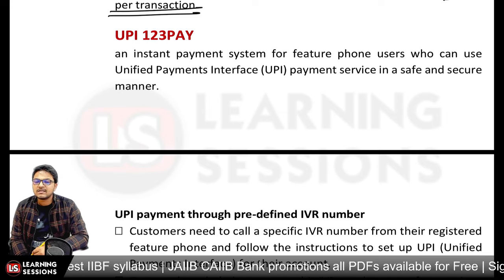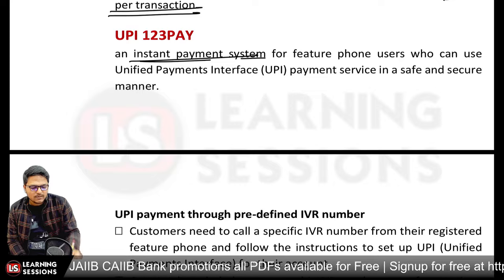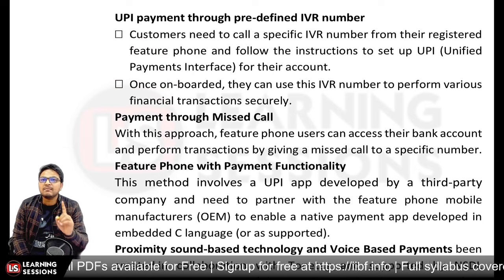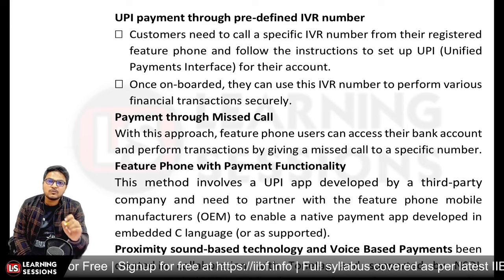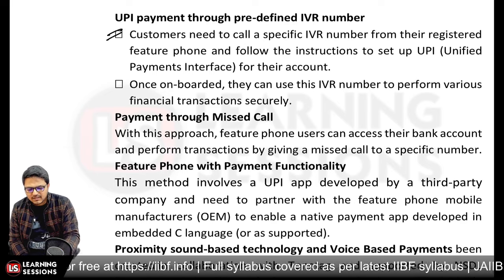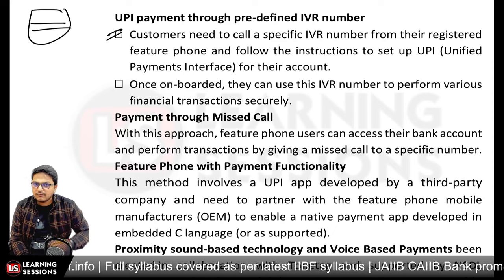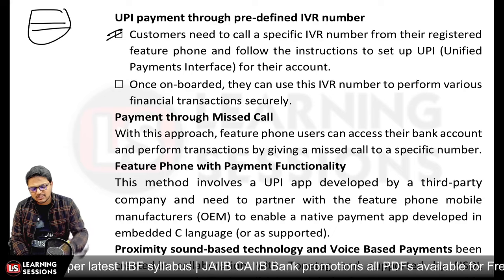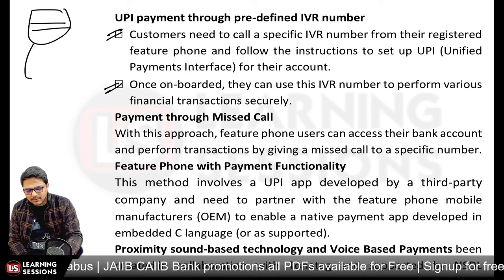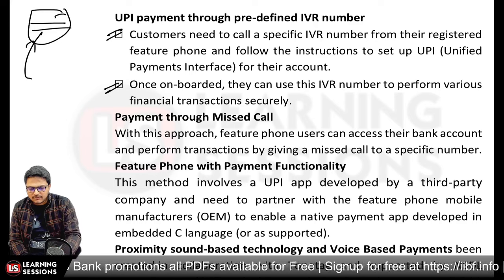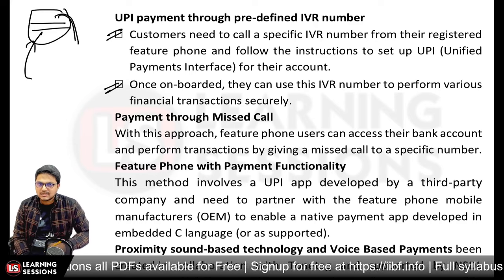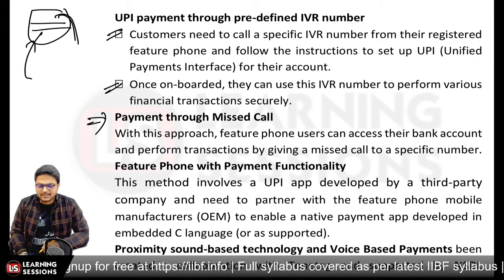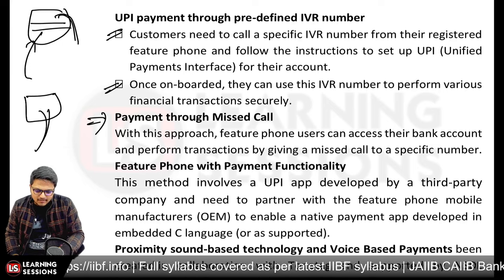UPI123Pay is an instant payment system for feature phones using UPI payment services in a safe and secure manner. UPI payment can be made through a predefined IVR (Interactive Voice Response) number. The customer calls a specific number from the registered feature phone and follows the transaction process to set up and use UPI for their account. Once onboarded, the customer can call or give a missed call to perform financial transactions securely.